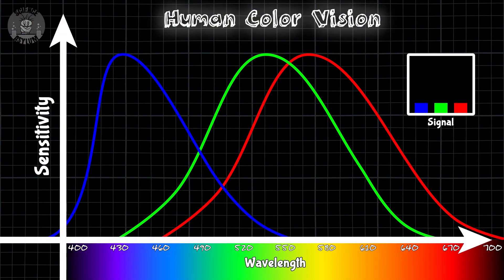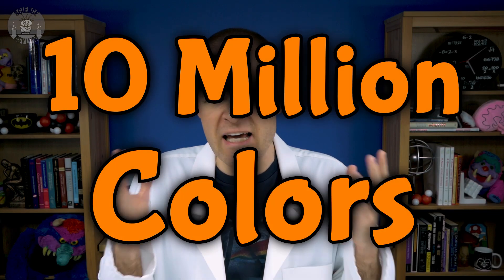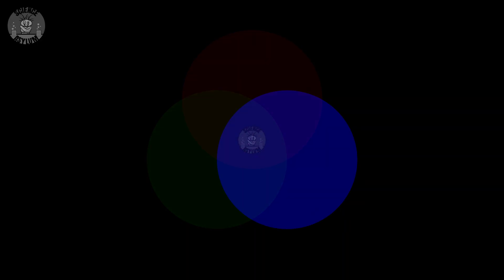What if all three types of cones activate intensely at the same time? Well, that's what your brain calls white. So if you total up all the possible signal combinations that your brain can receive, you get about 10 million different colors.